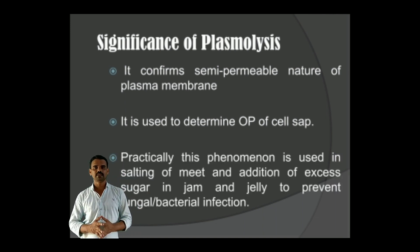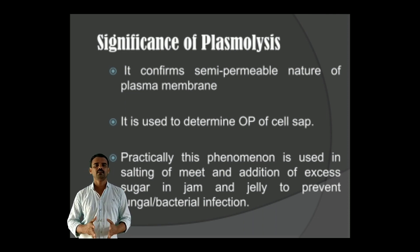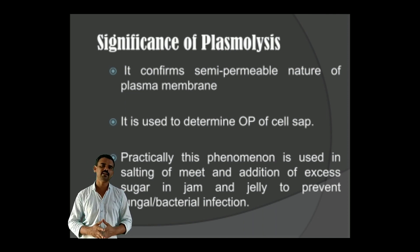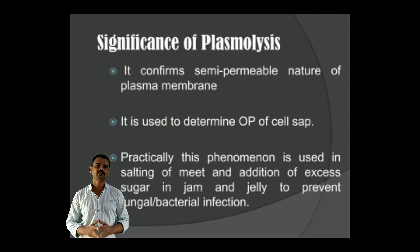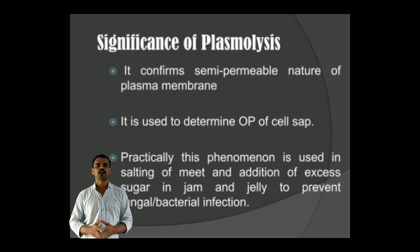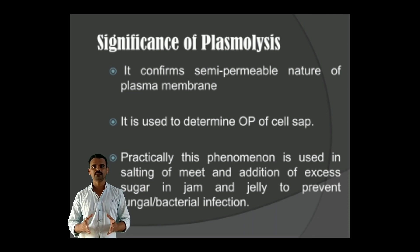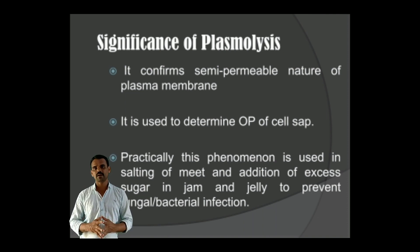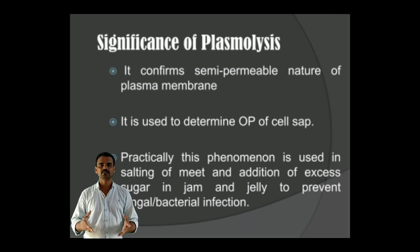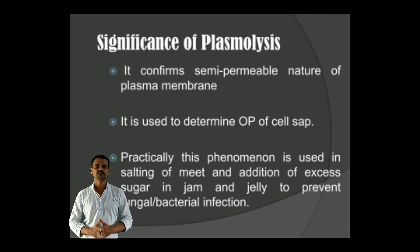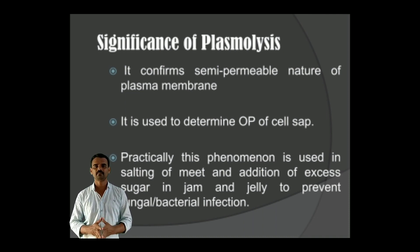The principle of Plasmolysis is utilized in the preservation of meat, where salting of meat is carried out. It is also utilized in germs and jelly, where highly concentrated sugar solution is used. Exposure to microorganisms like bacteria or fungi results in Plasmolysis of their cells, thus protecting germs and jelly from different kinds of microorganisms.